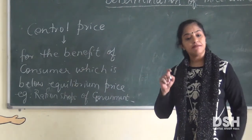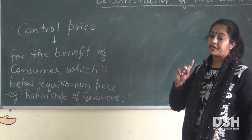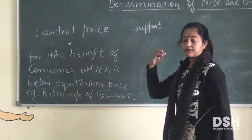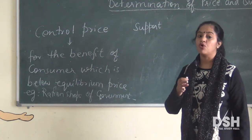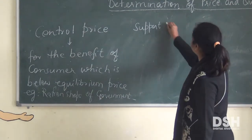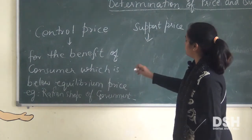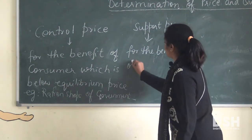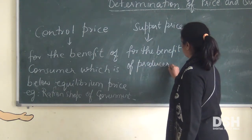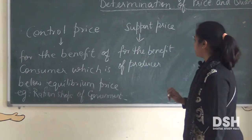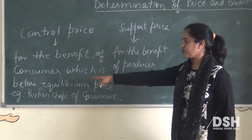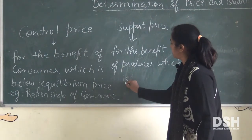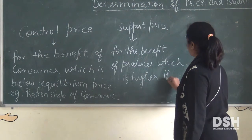The second type of price determined by government is the support price, which is for the favor of the producer. If the price of sugar is only 40 rupees per kg in the market, then the farmer will incur a loss. So the support price is set for the benefit of producers. This price is generally higher — it is above the equilibrium price.